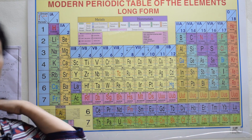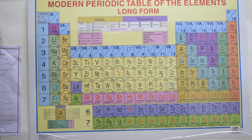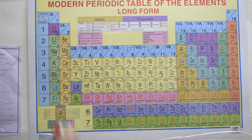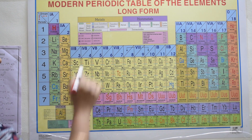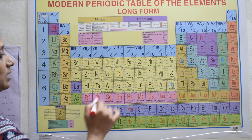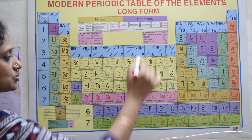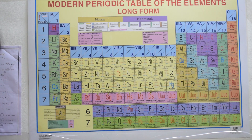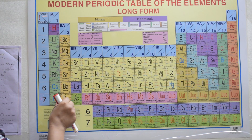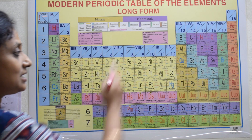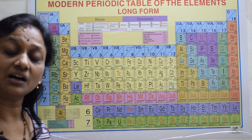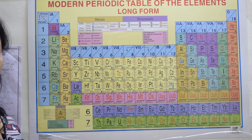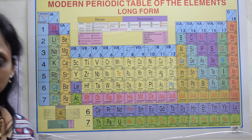Elements which have similar physical and chemical properties fall under one particular group. The recurrence of these properties is what we call periodicity. That completes the definition of the Modern Periodic Table.